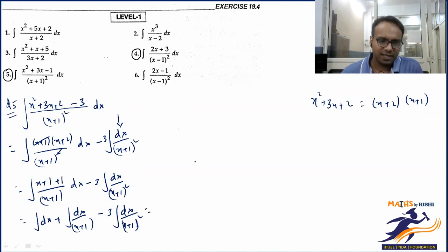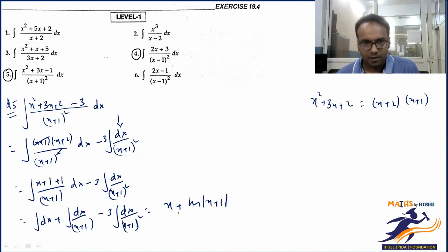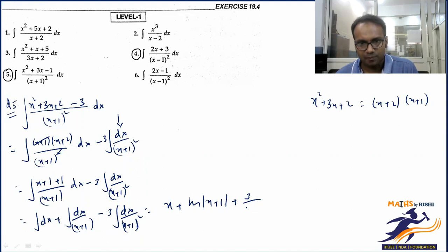Integrating each part: ∫dx = x, ∫dx/(x+1) = ln|x+1|, and ∫dx/(x+1)² gives -1/(x+1). With the minus 3 coefficient, this becomes +3/(x+1). So the final answer is x + ln|x+1| + 3/(x+1) + C.